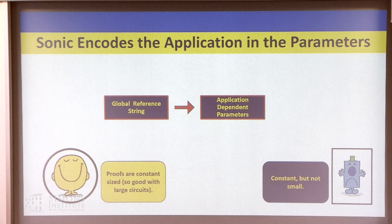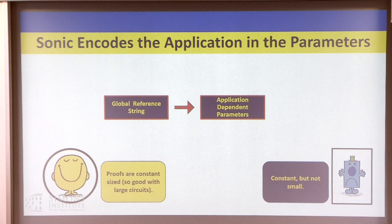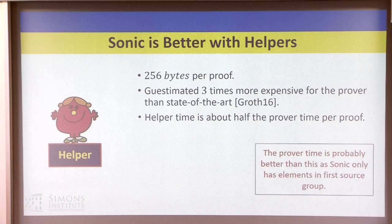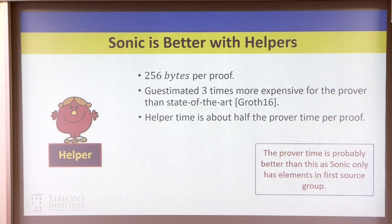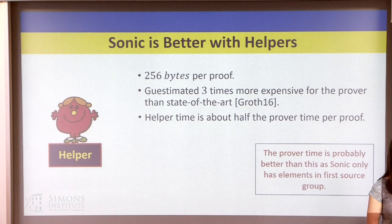In the Sonic setting, we do this derivation and get proofs which are constant-sized. The practical constants are quite large — it was a feasibility result. But where we get good constants and are competitive with the state-of-the-art is when you're not producing just one proof, but many, many proofs. Cryptocurrencies are a classic example: if you're a node, you're verifying all transactions in a block at the same time, and that is precisely where Sonic helps.